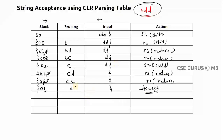Check I1 to dollar: accept. So we write accept — the string BDD is accepted by the grammar. You can observe that after all reductions we obtained S, the start symbol. This is bottom-up parsing: we start with the string (leaves) and work up to the root (start symbol). This is how we check string acceptance using the CLR parsing table.